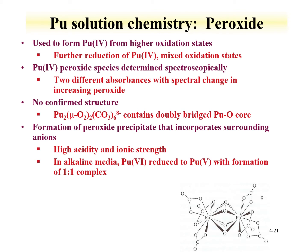Peroxides, as mentioned earlier for uranium, form interesting compounds with plutonium as well. The peroxide can also be used to change the redox state — for instance oxidizing from the 4 to the 6. There is no confirmed structure of the plutonium bridge species; this is a proposed structure. However, it is known that you can form peroxide precipitates that will incorporate surrounding anions, similar to uranium. The use of peroxide is a route for precipitating plutonium from solution for separations.